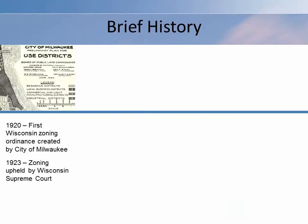Zoning is one of the most widespread land use controls used by local government. With origins in Germany in the late 19th century, zoning first took hold in the United States in the early 20th century.